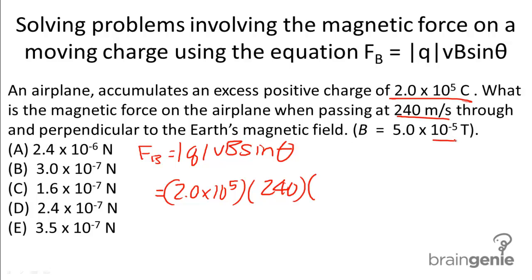Our magnetic field is the magnetic field of the Earth, which is 5.0 times 10 to the negative 5th. And finally, sine of theta. It says here that we pass perpendicular, therefore theta is 90 degrees, so we're going to use sine of 90.